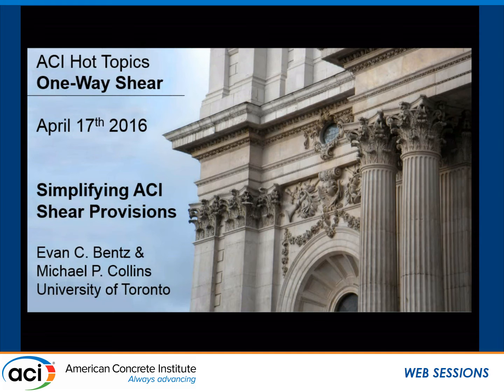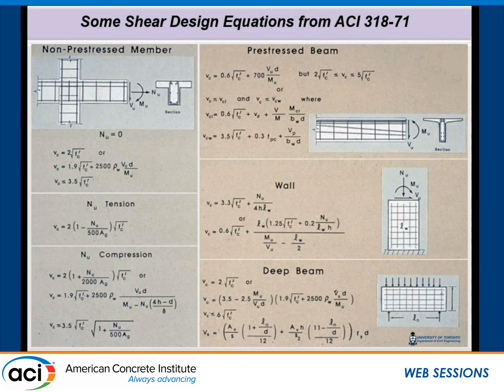I'm going to talk today about our proposal for simplifying the ACI shear provisions. Two root FC prime is pretty simple, but a 1971 slide by my co-presenter Michael Collins shows 12 equations that say VC equals. Since then we've made progress — we got rid of the deep beam equations and wall equations — but we still have eight equations for VC. We can do better by having a single equation for VC that covers all cases.